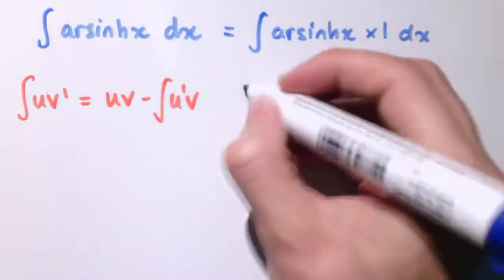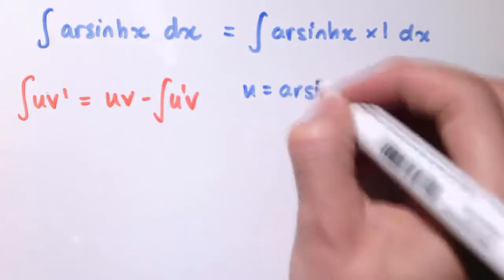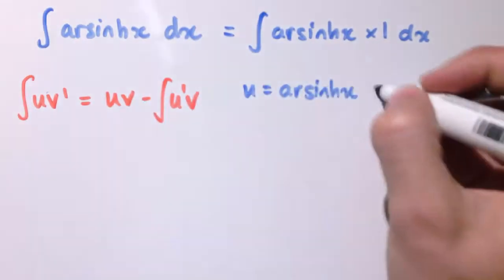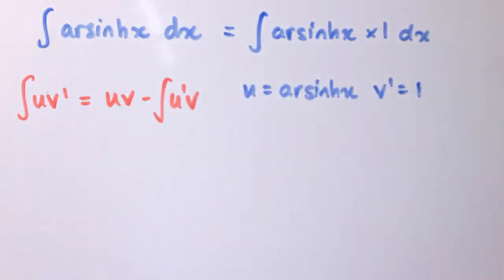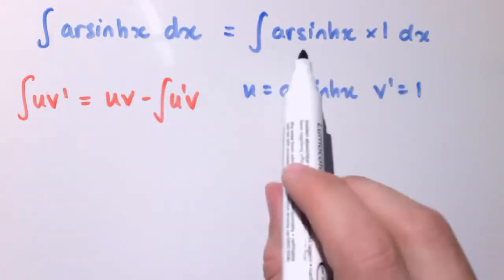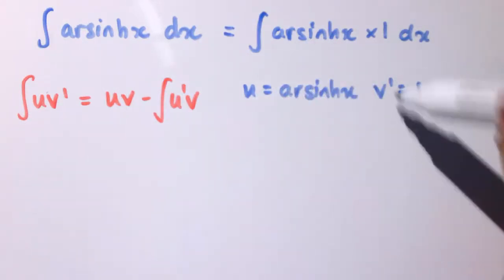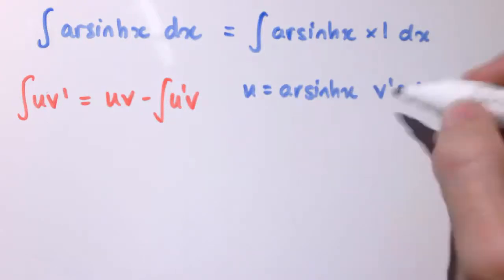We'll say then, our u is arcsinh of x and v' is 1. Obviously I must choose it that way around. If I tried to choose u as 1 and v' as arcsinh x, I'd immediately have to then try and integrate arcsinh x, which I can't do. But I can integrate 1 and I just get x.